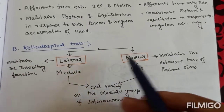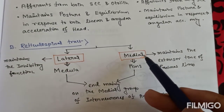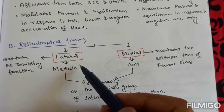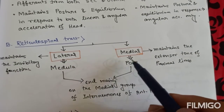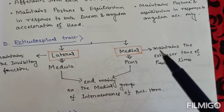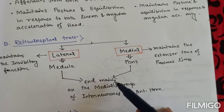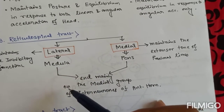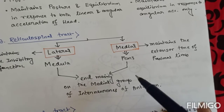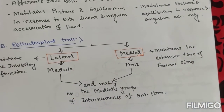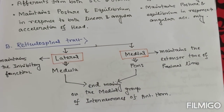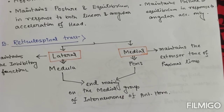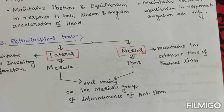Reticulospinal tracts are again of two types: lateral and medial. The lateral reticulospinal tract originates from the medulla, and the medial reticulospinal tract originates from the pons. Both of them end mainly on the medial group of interneurons of the anterior horn. The lateral reticulospinal tract maintains inhibitory functions.